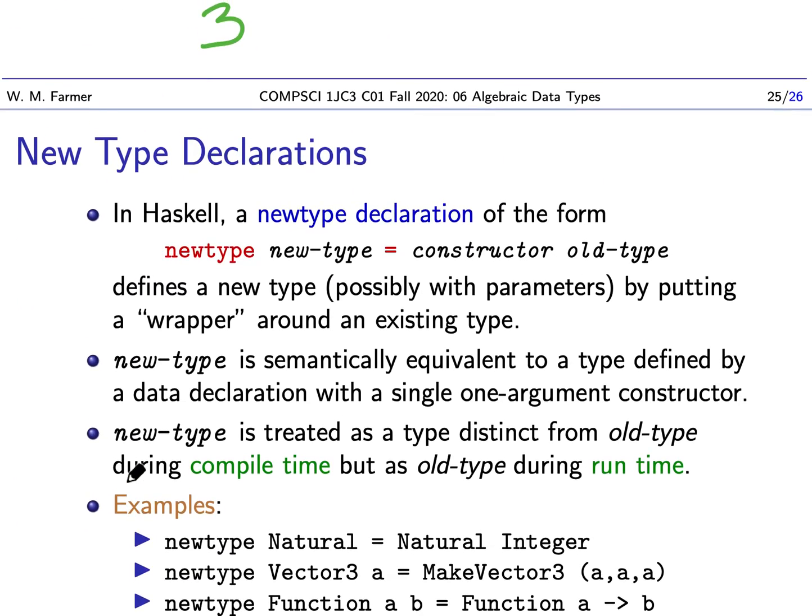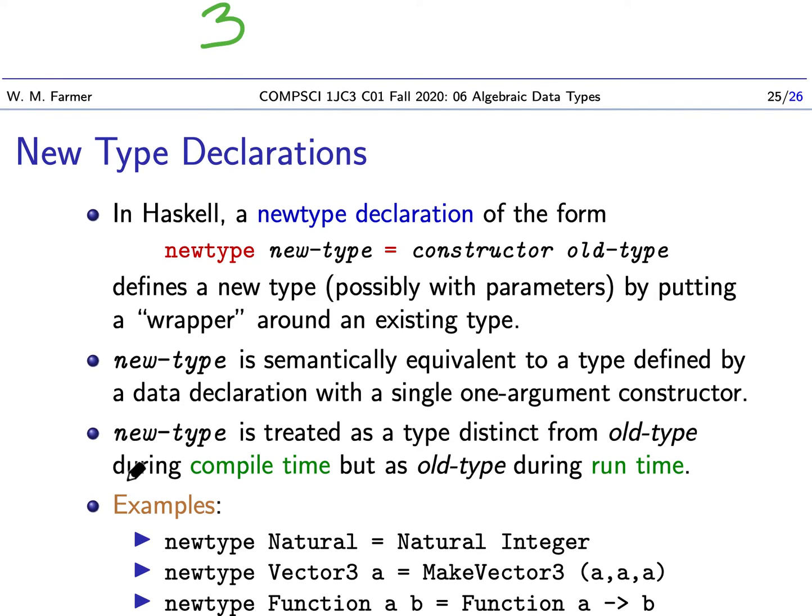Okay, so we have one more thing to look at here. This is the notion of a new type declaration. So remember we had type declarations. So let me just remind you. If we have a type declaration, we have a new name equals an old type. But this is a new type declaration. And we actually create a new type. And the new type is constructed by having a constructor and an old type.